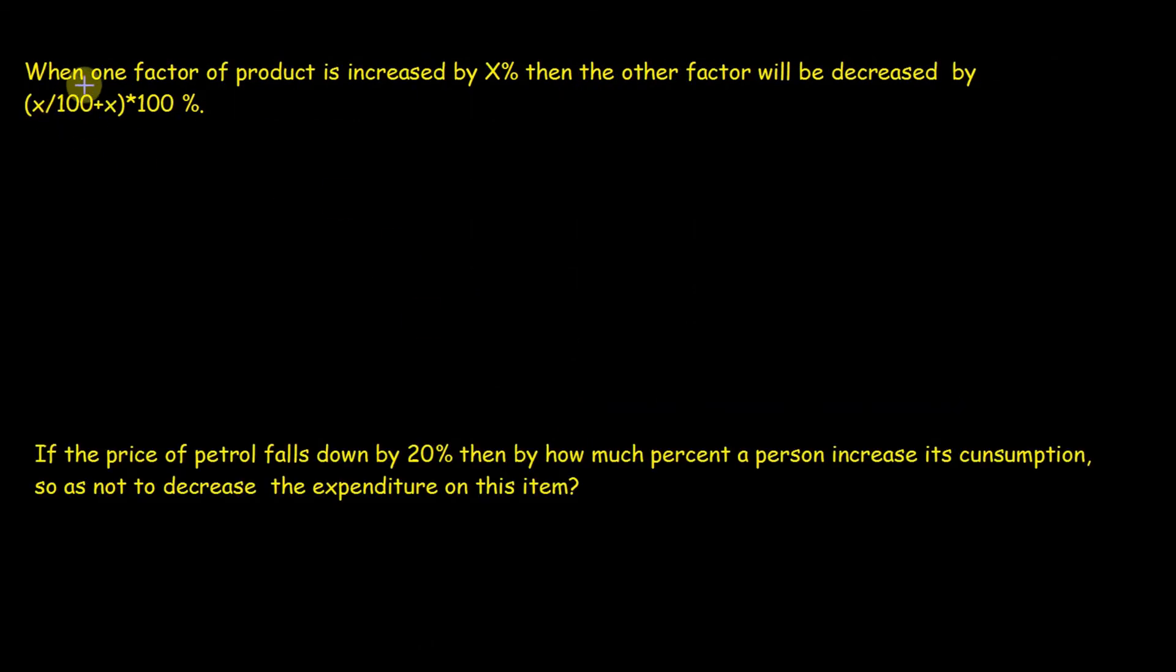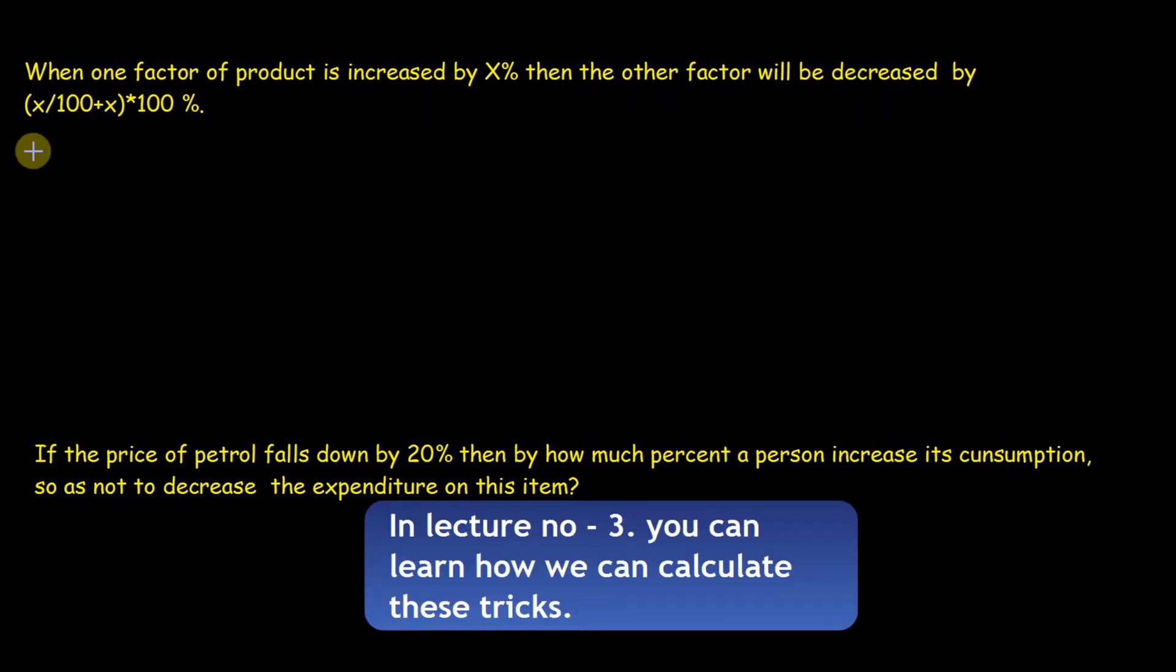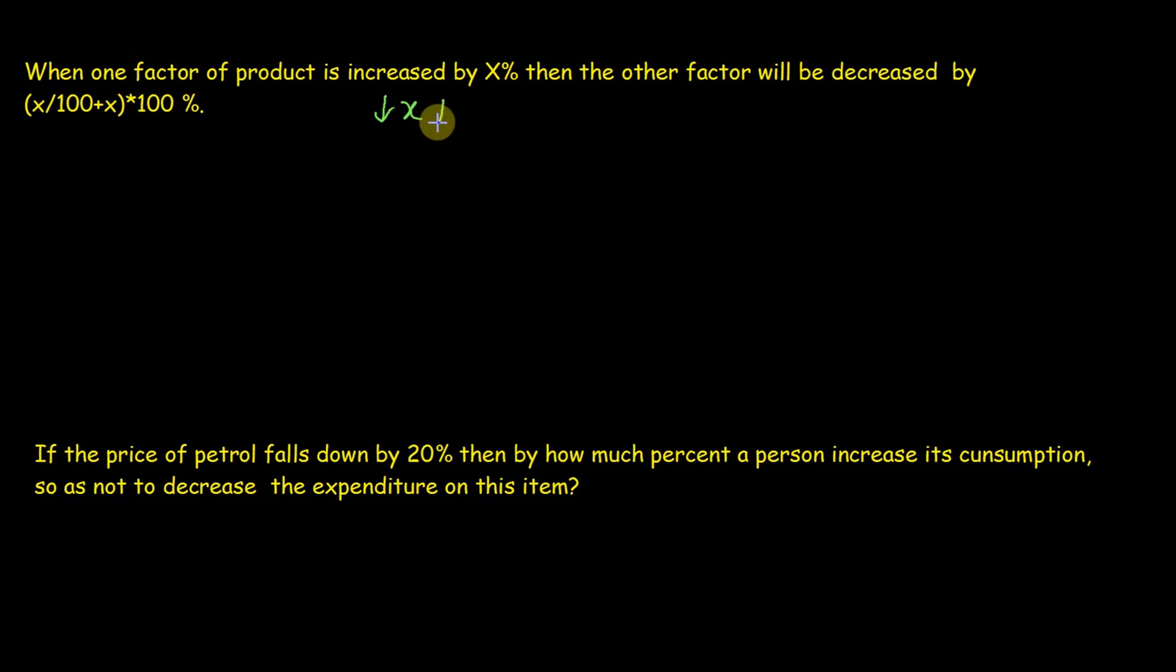The trick is: when one factor of a product is increased by x percent, then the other factor will be decreased by x upon (100 + x) multiply by 100 percent. And if suppose a factor is decreased by x percent, then other factor of product will be increased by x upon (100 - x) and multiply by 100 percent.